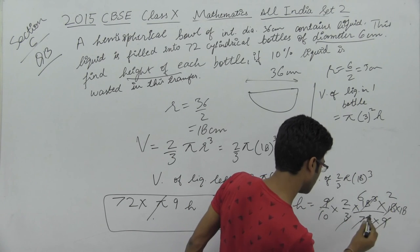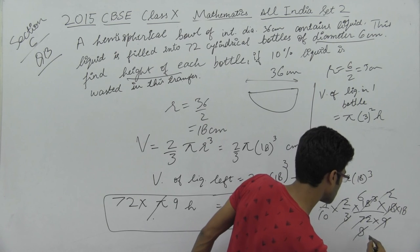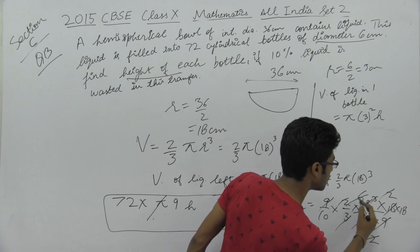Simplifying the equation by canceling common terms: 2, 6, 2, and 18 cancel out, leaving 3.